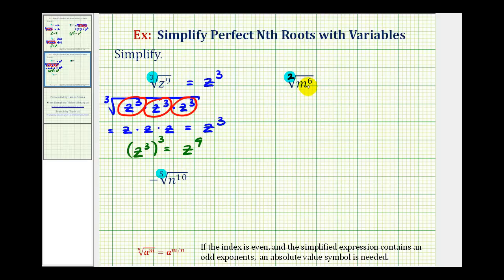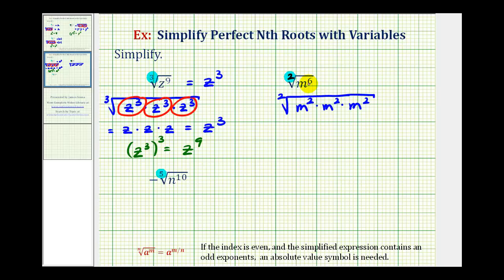For the square root of m to the sixth, because the index is two, we want to find all the perfect square factors of m to the sixth. Every time we have two equal factors, we have a perfect square factor. We can write m to the sixth as m to the second times m to the second times m to the second. Here's a perfect square factor, here's a perfect square factor, and here's a perfect square factor. So this simplifies to three factors of m, or m to the third.